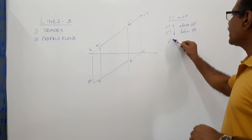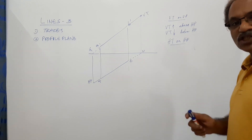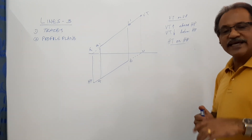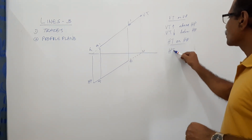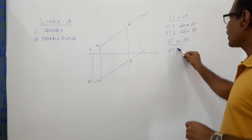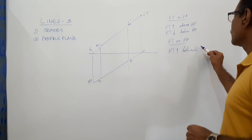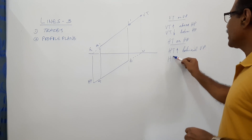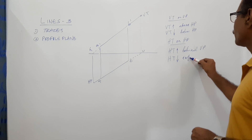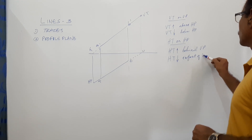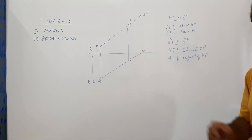Similarly, HT is a point on HP. A point lying on HP can be designated by specifying its distance from VP. If HT comes above XY, it means HT is behind VP. If HT comes below XY, it means it is in front of VP. This is an important concept.